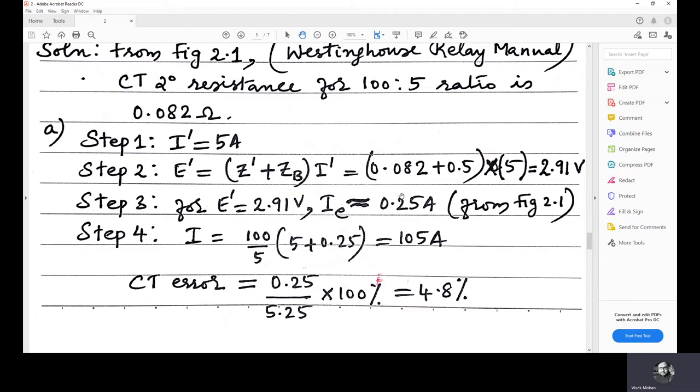Now, you need to find the total current. Total current. What is the total current? Total current in primary. If you want to find the total current in primary, IE plus I dash is, what is IE plus I dash? I dash is 5 amps, 0.25 is IE. So, the total secondary current is 5 plus 0.25, which is 5.25. And the turns ratio is given. So, you can find the primary value. So, 5 plus 0.25 into 100 is to 5, right? 100 by 5, which is equal to 105 amps.